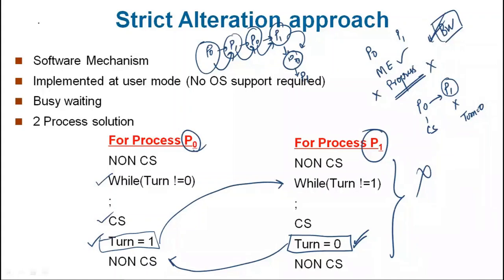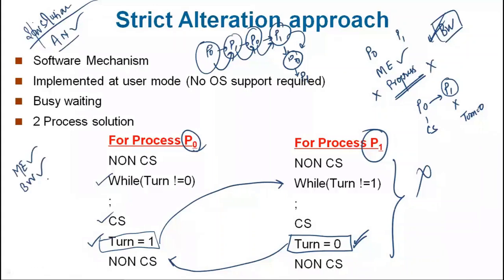We have seen this solution — there are some lines of code, so this is a software solution. If it is a software solution, this is architecture neutral. Which properties are satisfied? Mutual exclusion: satisfied. Bounded waiting: satisfied. Progress: not satisfied. Architecture neutral: satisfied. So 3 out of 4 properties are satisfied.